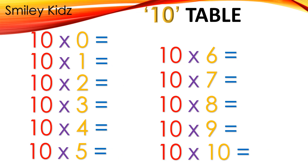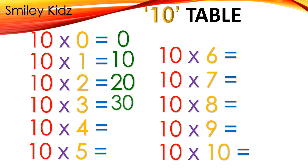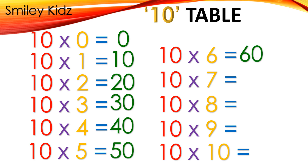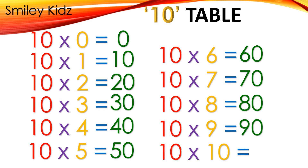Table 10: 10×0=0, 10×1=10, 10×2=20, 10×3=30, 10×4=40, 10×5=50, 10×6=60, 10×7=70, 10×8=80, 10×9=90, 10×10=100.